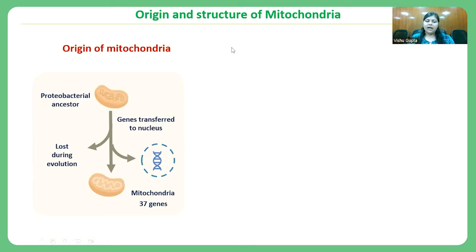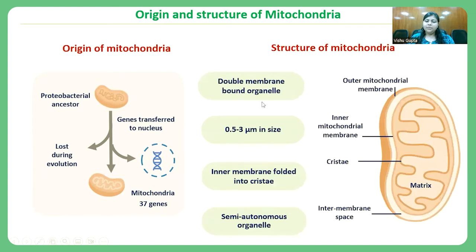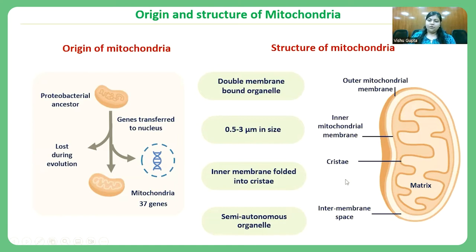If we look at the structure of mitochondria, it is a double-membrane-bound organelle with outer and inner membranes, around 0.5 to 3 microns in size. The mitochondria also has several infoldings in the inner membrane known as cristae, which increase the surface area of the inner membrane. Mitochondria has a rich matrix of DNA, proteins, and other small molecules, and is known as a semi-autonomous organelle because it has its own genome but is also dependent on the nuclear genome for a variety of its functions.